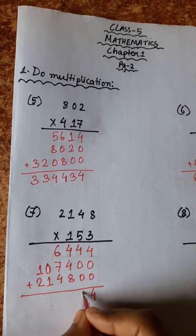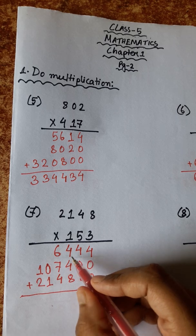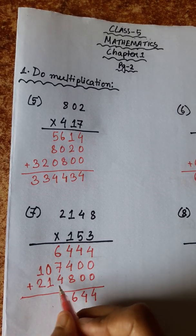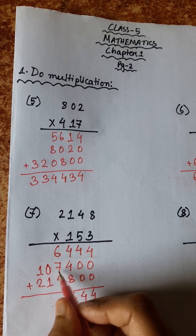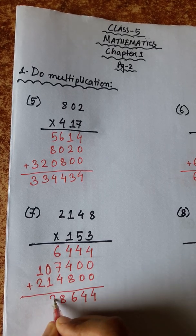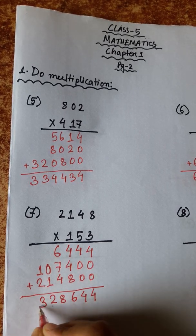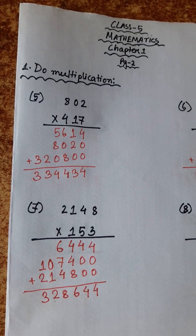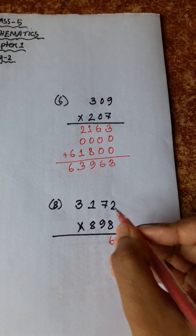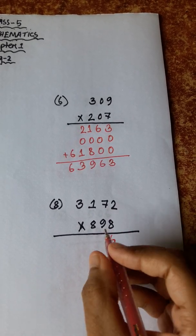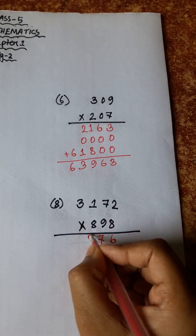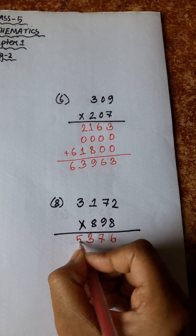4 plus 4 is 8, plus 8 is 16. 4 plus 1 is 5. 7 plus 5 is 12, plus 6 is 18, carry 1. 1 plus 1 is 2. 2 plus 1 is 3. 8, 8 plus 5 is 13, carry 1. 8, 3, 24 plus 1 is 25.